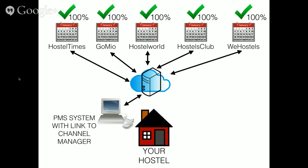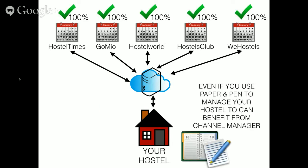Some hostels have a PMS system that provides a link to a channel manager. So basically when you receive a reservation — either on the phone or on your website — and you enter that into your PMS system, then that PMS system will immediately report this to your channel manager, and then your channel manager will report that to all of your different distribution channels. Even if you're using pen and paper, and there's still many hostels — frequently small hostels — using pen and paper, you can benefit from a channel manager. You just need to go to the channel manager, report how many beds are available to be booked, and it will keep all of your distribution channels up to date.